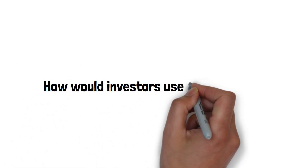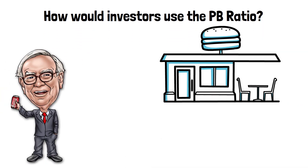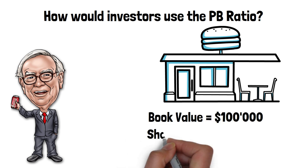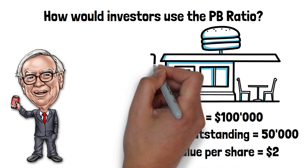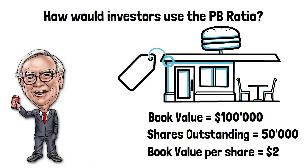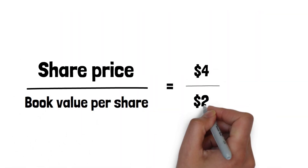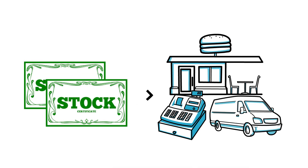How would investors use the PB ratio? Let's say Warren wants to invest in Dara's Diner. Dara's Diner has a book value of $100,000 and 50,000 shares outstanding, resulting in a book value per share of $2. The company currently trades at $4 per share. Using the PB ratio, we can say that Dara's Diner trades at two times its book value. In other words, the stock costs twice as much as the assets could be sold for.